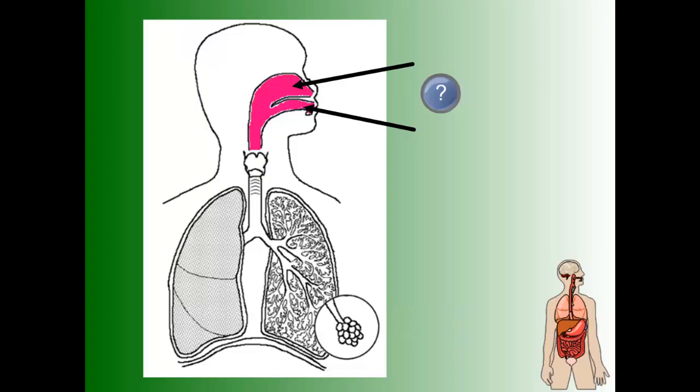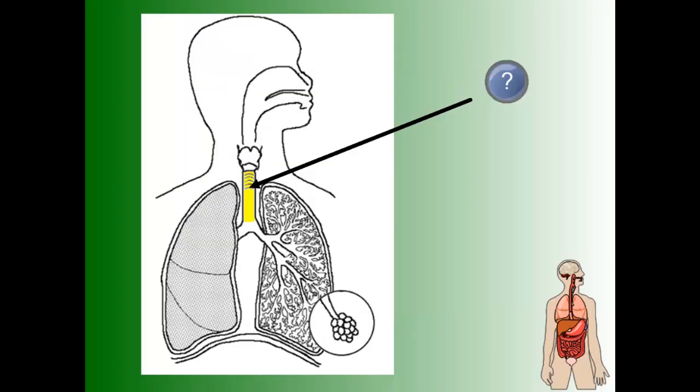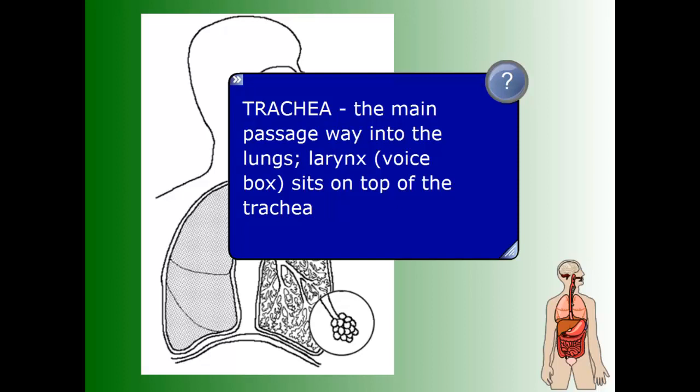The first structure is the nose and the mouth, and their main job is to bring in air and oxygen into the lungs. Once the air enters, it passes past our vocal cords and enters this thick, rigid, strong tube called the trachea, which is the main passageway into the lungs.